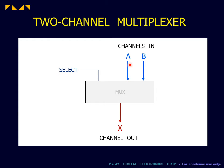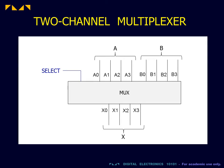When a channel is allowed to transmit its data to the output, that channel is said to be open. All other channels are said to be closed. Note that each channel may consist of a number of lines. However, all channels, whether input or output, must contain the same number of lines. When labeling the individual lines of a channel, we'll use the overall channel name — in this case A — followed by a number. The numbering starts from zero on the left and increases to the right.